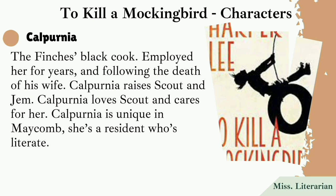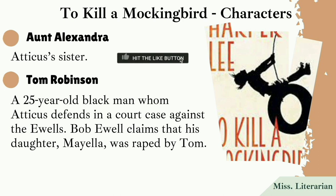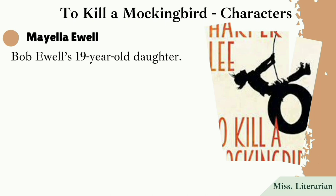Calpurnia raises the kids Scout and Jem. Aunt Alexandra is a sister of Atticus and is married. Tom Robinson is a 25-year-old black man whom Atticus defends in court against the Ewell's case — Bob Ewell claims his daughter Mayella was raped by Tom. Tom is kind, a churchgoer, married, father of three children, and a good employee of Mr. Deas. Mayella Ewell is the 19-year-old daughter of Bob Ewell. The novel also has many other characters.